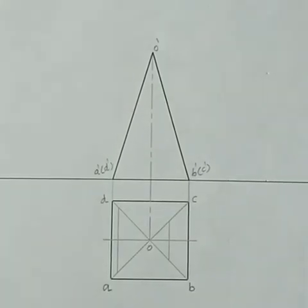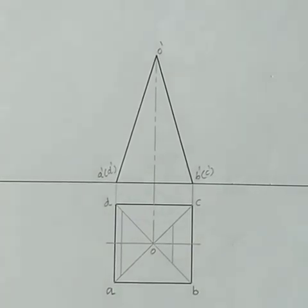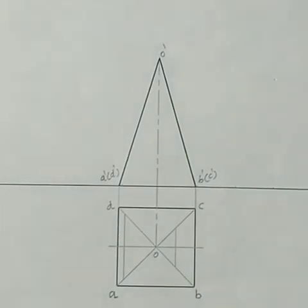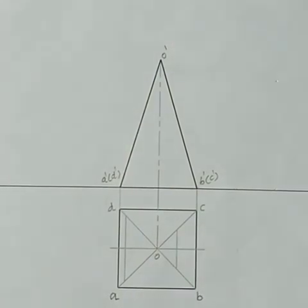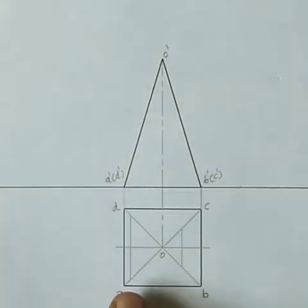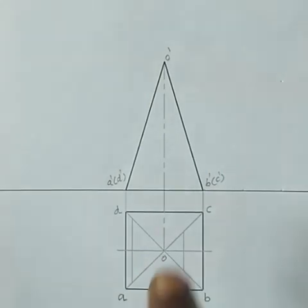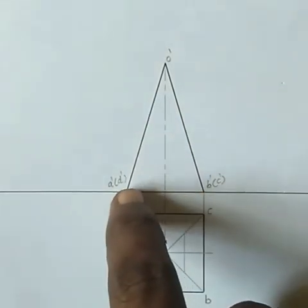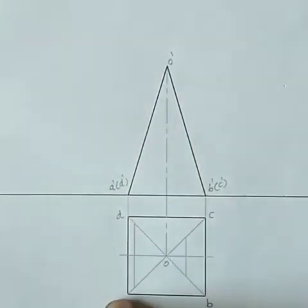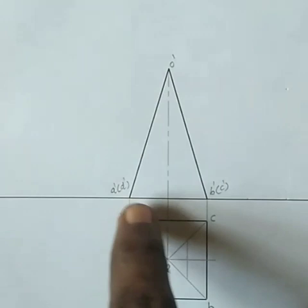First, I am going to show you the square pyramid. If you have a square pyramid, the top view is labeled a, b, c, d and you will have the apex point from the diagonal. For the front view, the height is 50mm and the base size is 30mm. The front view corners are labeled O', D', B', C'.